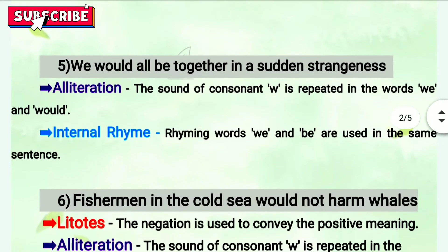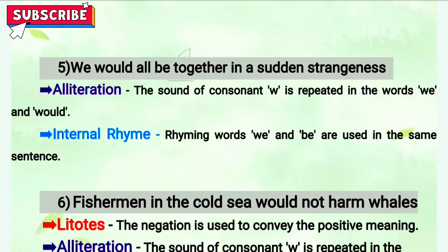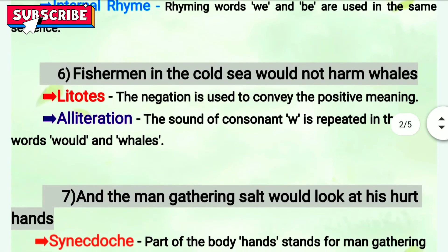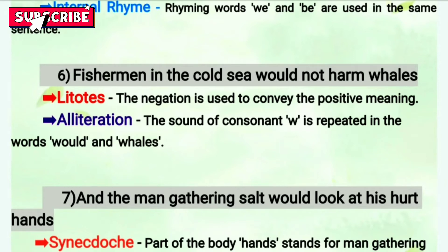Fifth line: 'We will all be together in a sudden strangeness.' First is alliteration — the sound of consonants W and S are repeated. Next is internal rhyme because words rhyme within the same sentence. Sixth line: 'Fishermen in the cold sea would not harm whales.' 'Not harm whales' — a negative word is used to represent a positive meaning, so that is litotes. W is also repeated twice, making it alliteration.